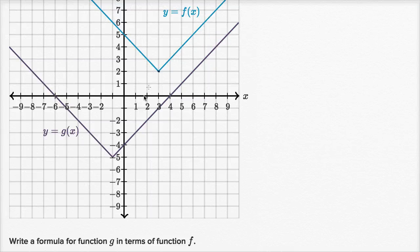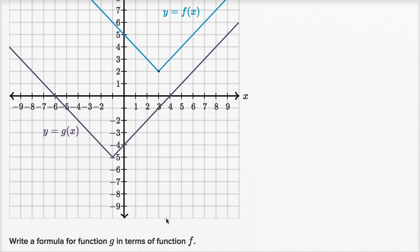We have these two graphs that look pretty similar: y equals f of x and y is equal to g of x. What they ask us to do is write a formula for the function g in terms of f. Let's think about how to do it — pause the video and see if you can work through it on your own.